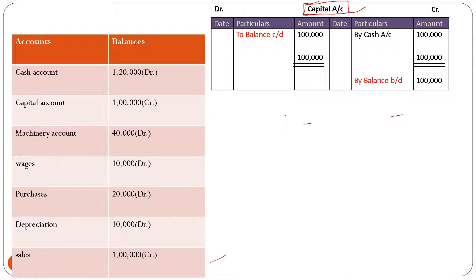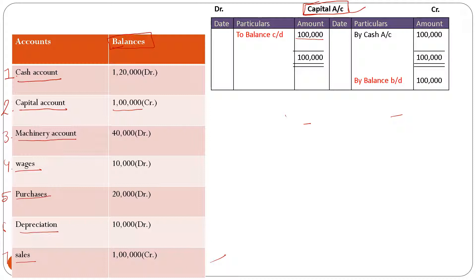What we have to do is note down the name of each account we prepared in the ledger. Number one: cash account. Number two: capital account. Number three: machinery account. Number four: wages account. Number five: purchases account. Number six: depreciation account. Number seven: sales account. Now we write down the balances of the respective accounts. In the capital account the balance carried down is one lakh rupees.